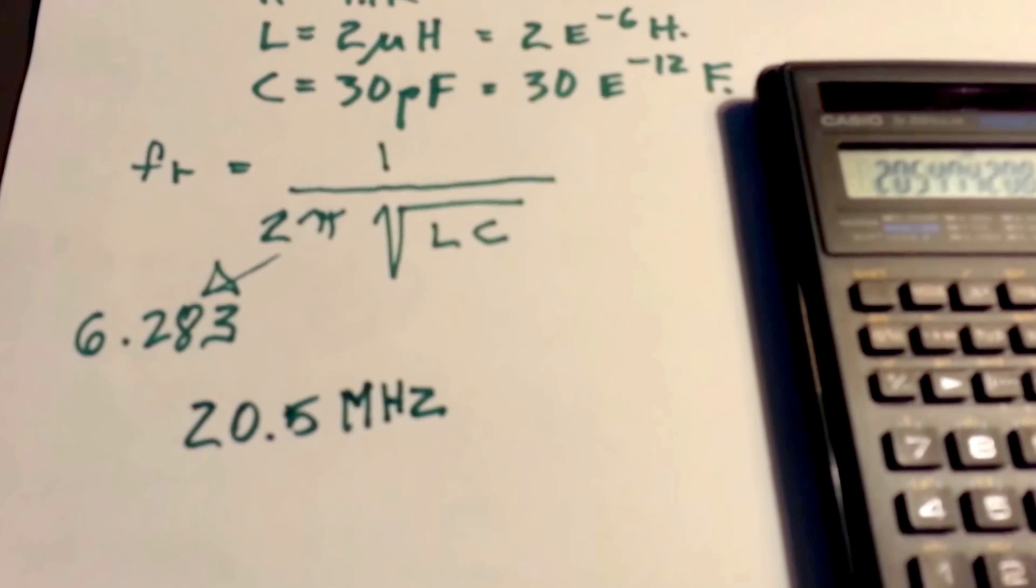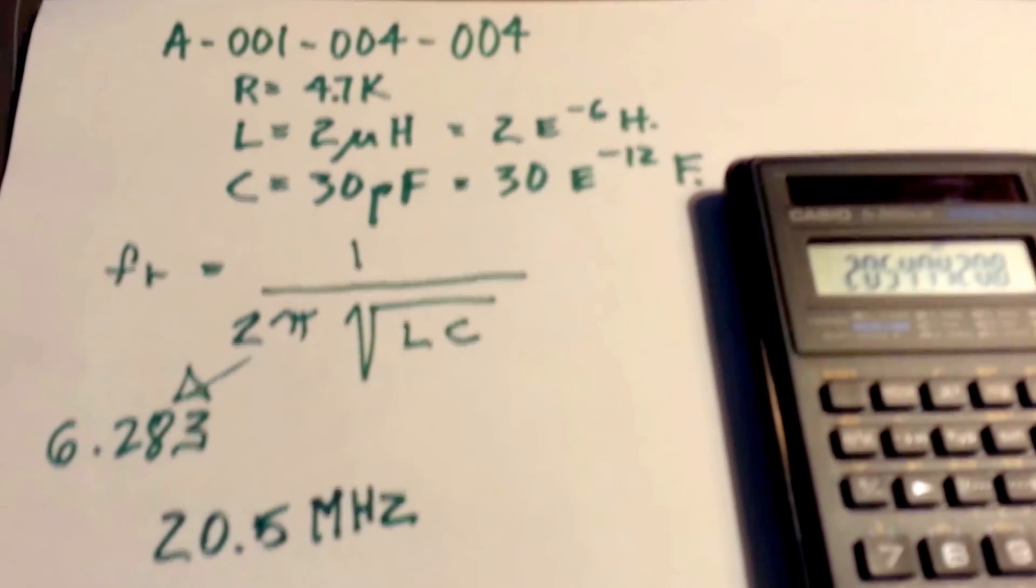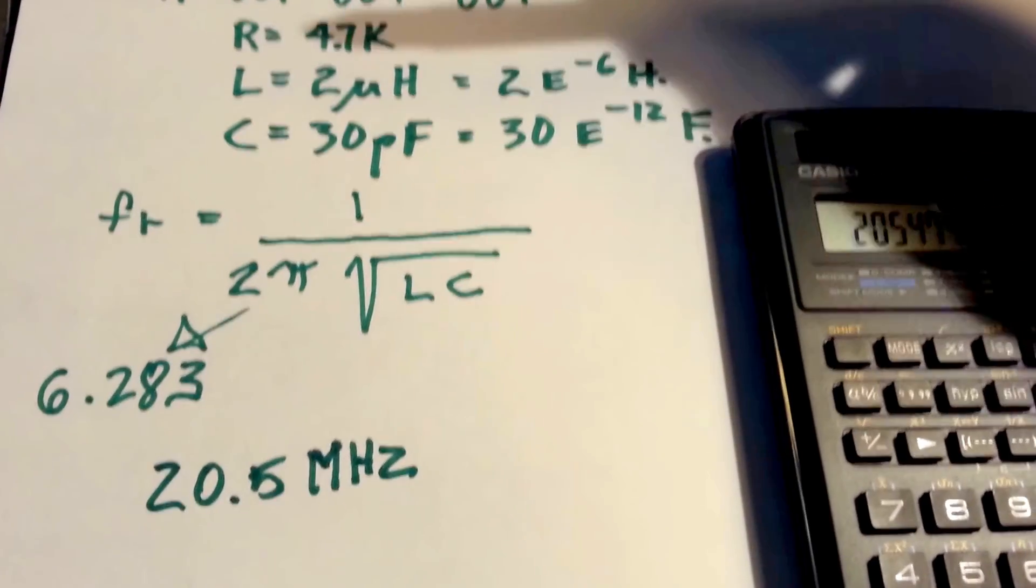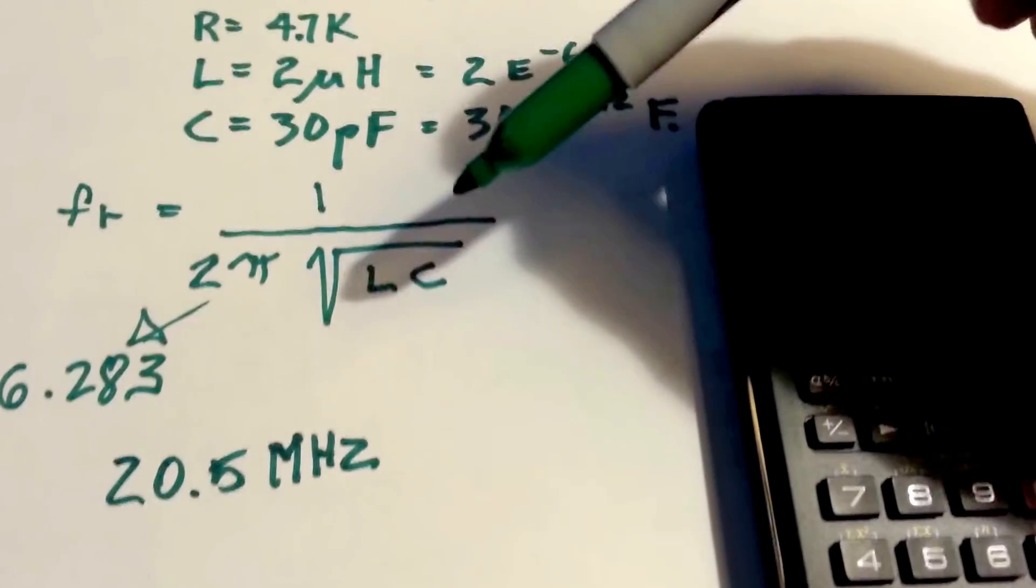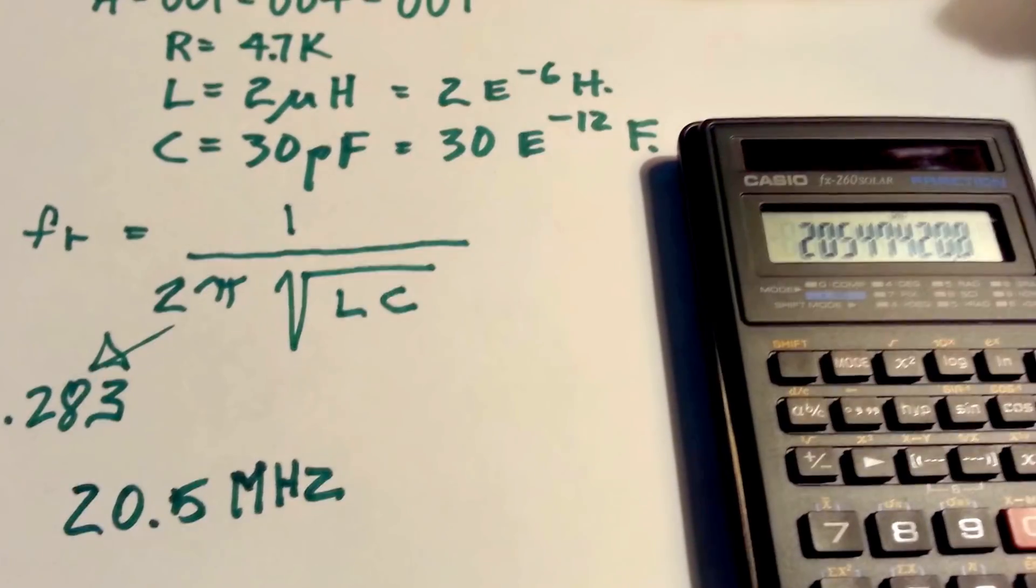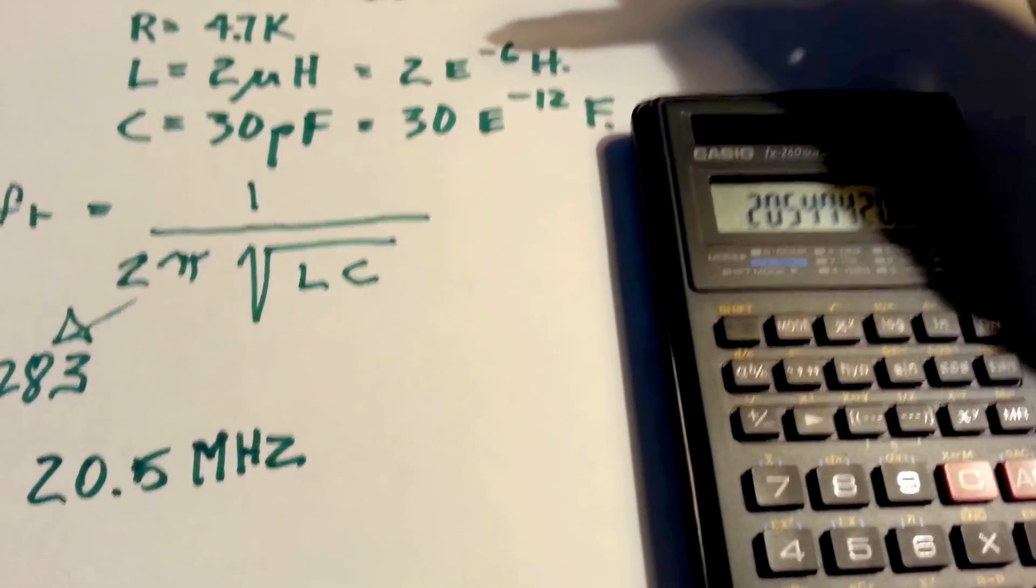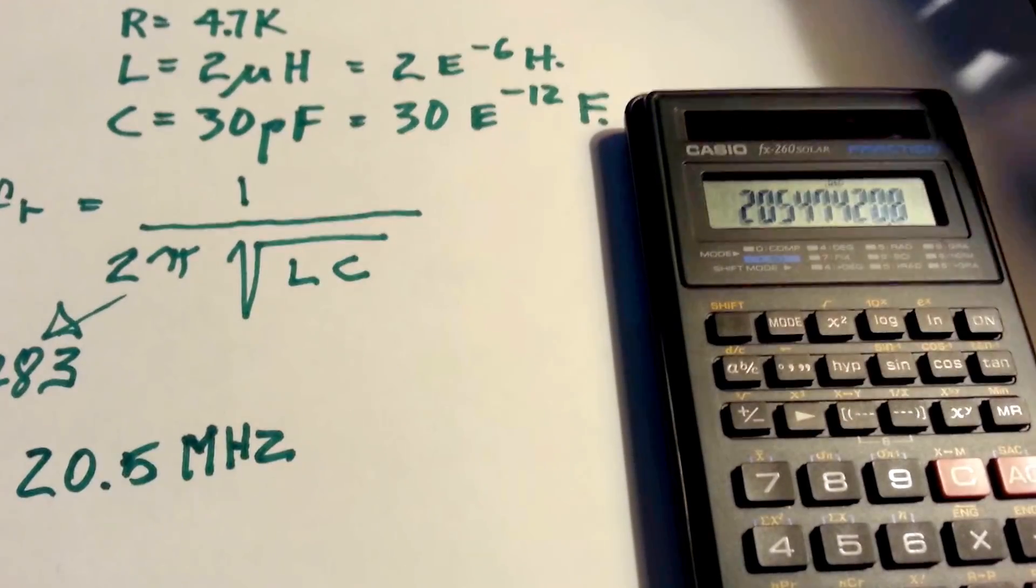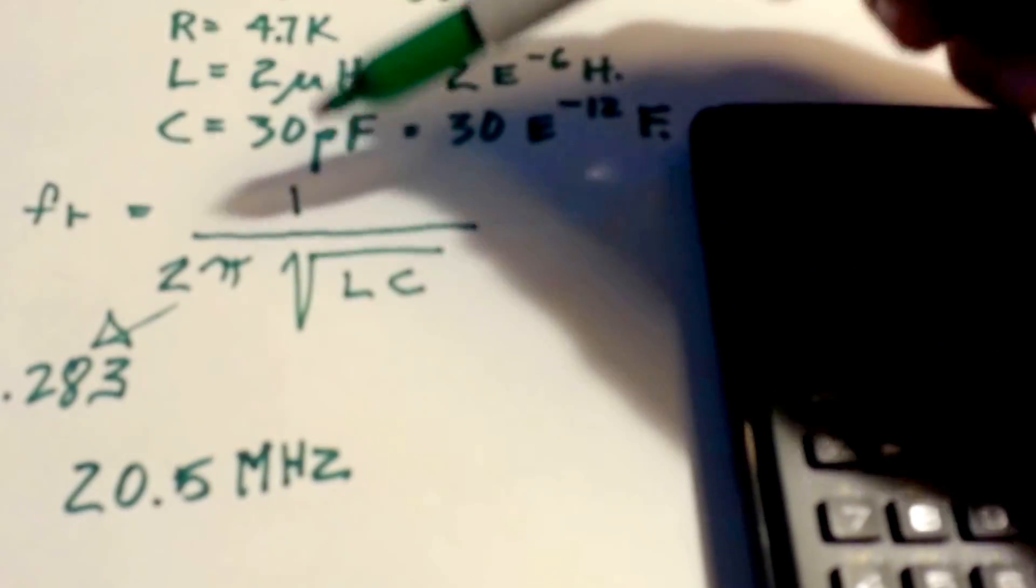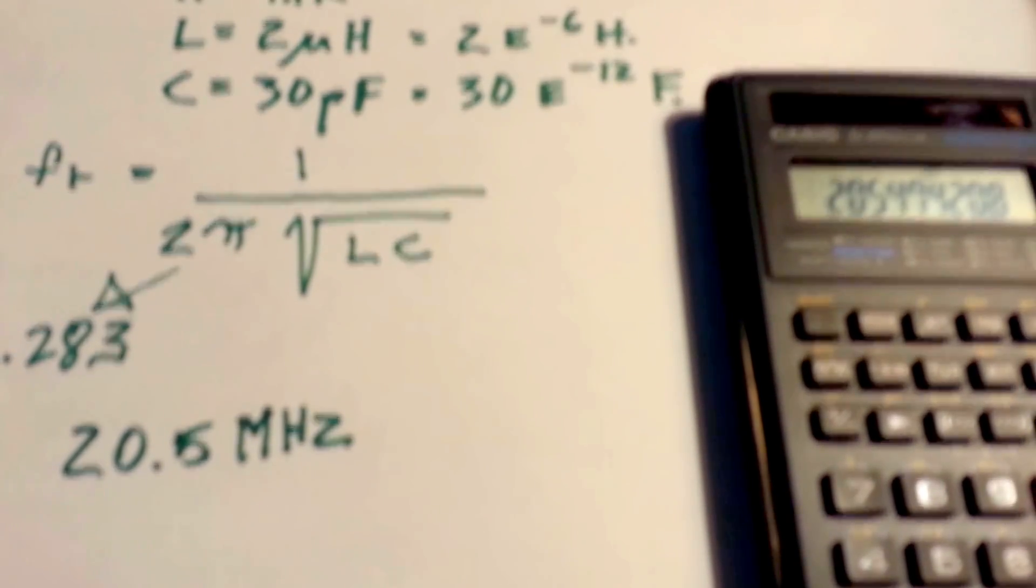Well, we got the right answer. If we didn't get the right answer, we might have made a mistake somewhere along the line. Anyway, just to reiterate, very easy to do on the scientific calculator. Multiply out LC. 2 times 30 is 60. And negative 6 plus a negative 12 is a negative 18. Take the square root of that, multiply by 2 pi or 6.283, and then take the reciprocal. Very easy to do on a scientific calculator. And with a little bit of practice, you'll be doing these things in less than a minute.